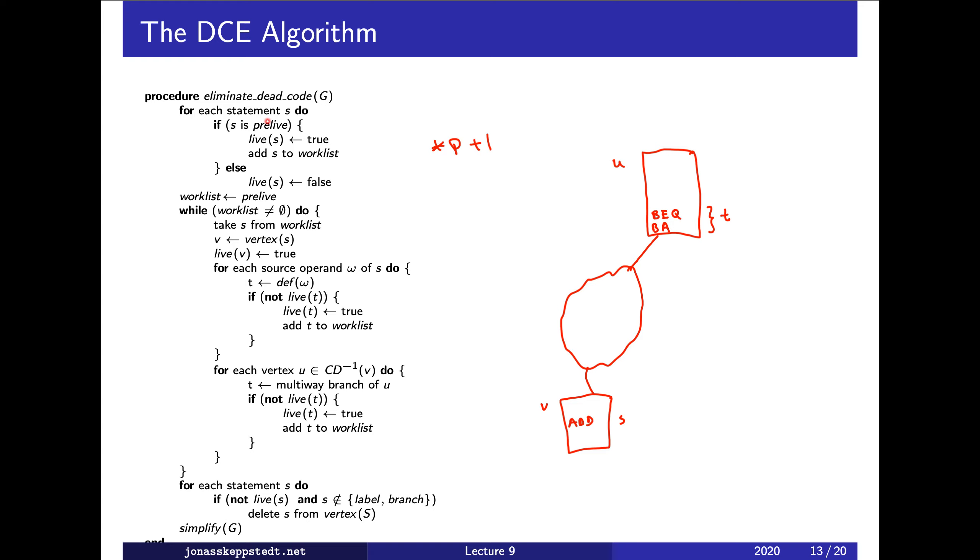Pre-live statements include return statements, calls to unknown functions, or known functions that affect output such as printf. But a call to a math function which won't necessarily affect output is not marked as pre-live. Calls to unknown functions are marked as pre-live.